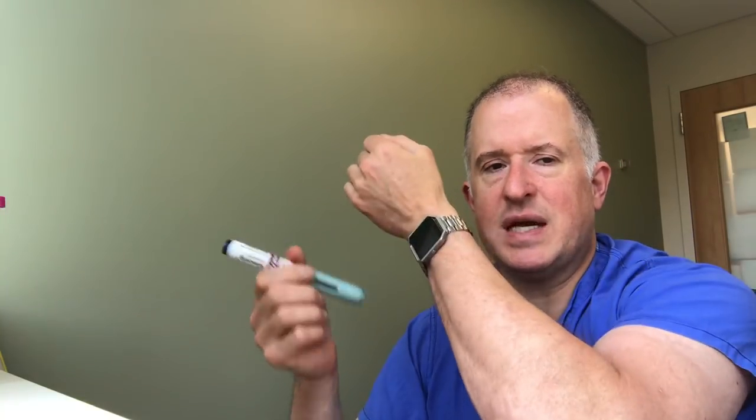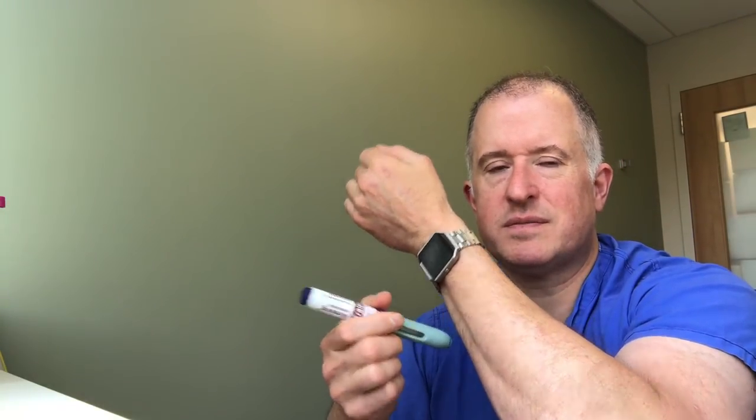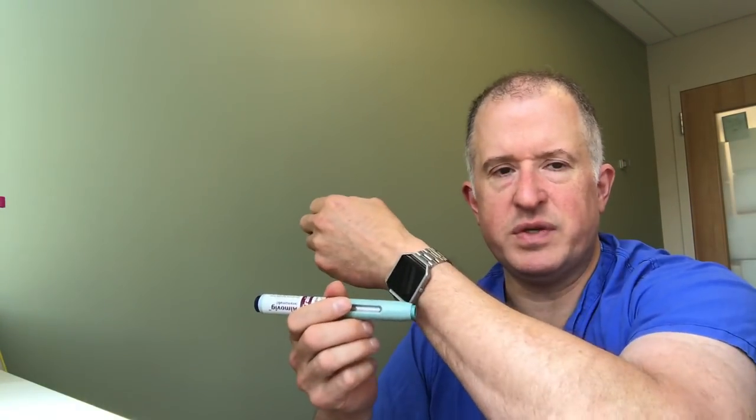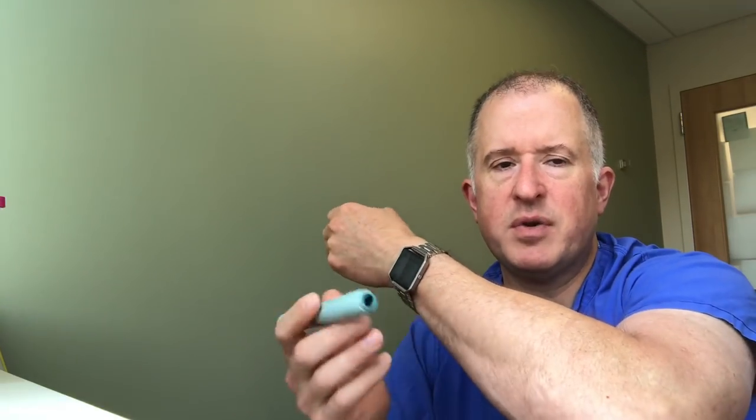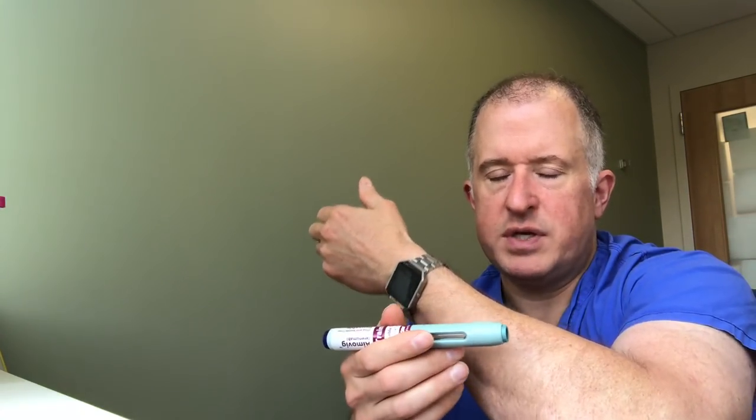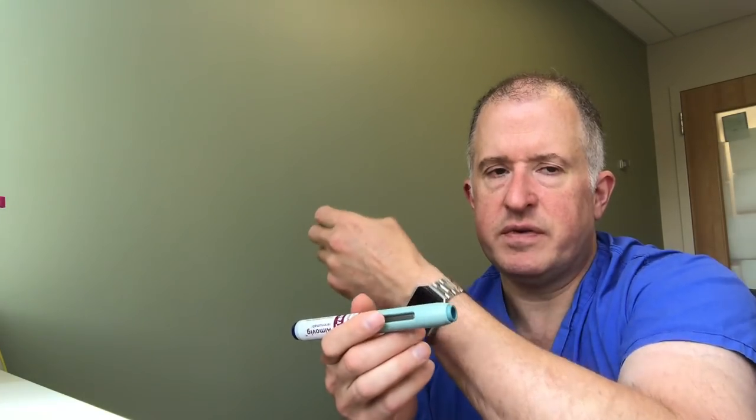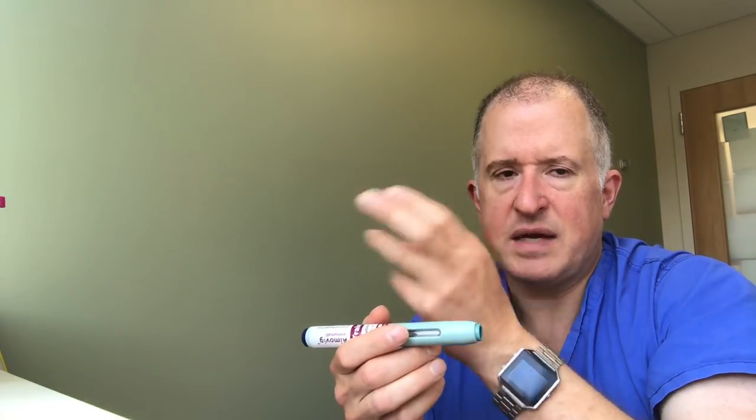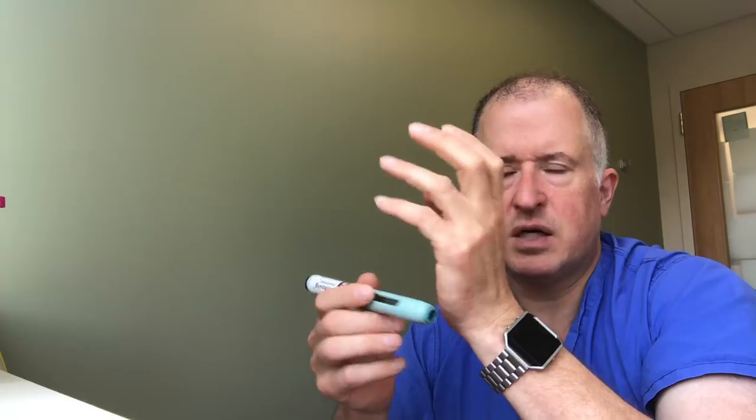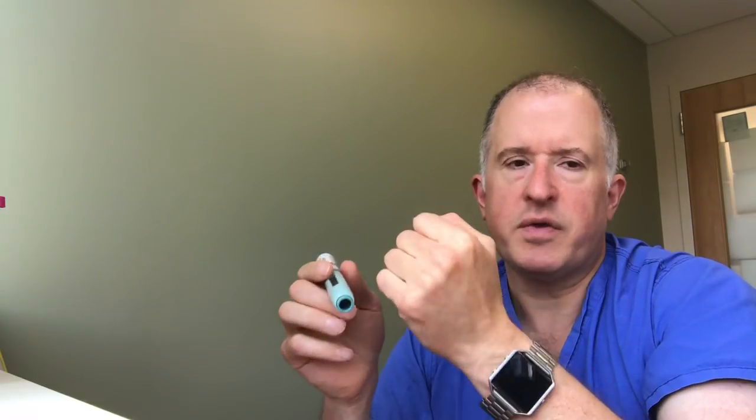For demonstration purposes, I'm going to use my forearm because it's hard to picture those other ones without contorting myself. Just remember when I show the forearm, that's only for demonstration. When patients do this in real life, they're going to use one of three spots: back of the arm, belly a couple inches away from the belly button, or the front of the thigh.